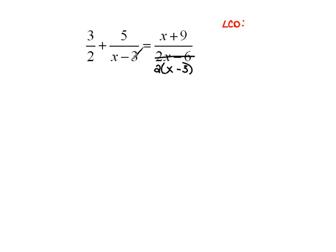And now that everything is fully factored, we can see the least common denominator much easier. So, here, our common denominator now would be 2, and also x minus 3.